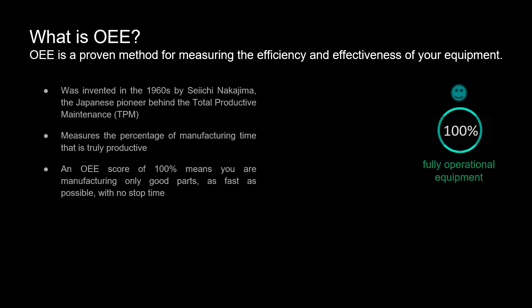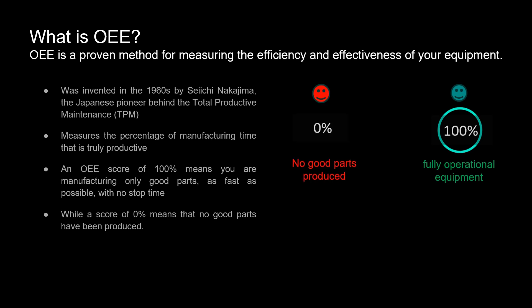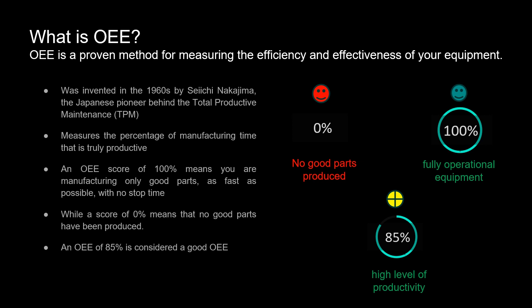If your OEE score hits 100%, you've reached the ideal in manufacturing — you're making only good parts and your machines are running at full speed with no downtime. A 0% OEE is a red flag, meaning things aren't going right on the production line and you're not getting any good parts. And if your OEE is at 85%, you're doing really well — that's the score many in the industry aim for.